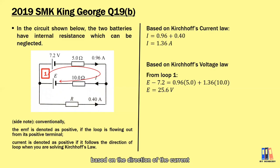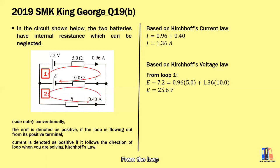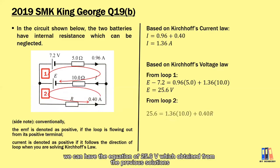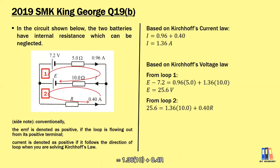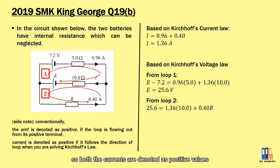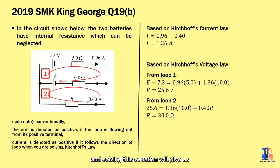For the second loop, based on the direction of the current, I draw an anticlockwise loop. From this loop, we write the equation: 25.6 V = 1.36 A × 10 Ω + 0.4 × R. Since both currents follow the loop direction, they are positive. Solving gives the value of resistance R = 30 Ω.